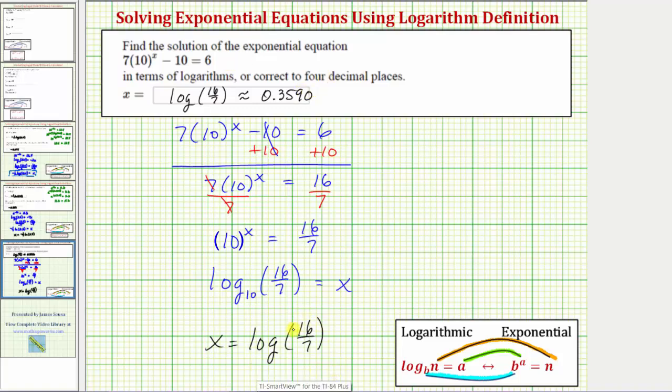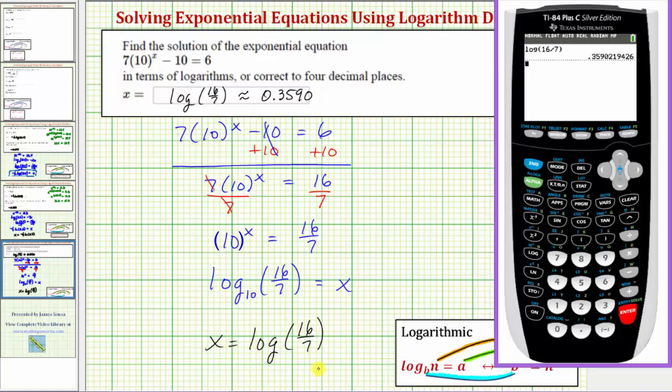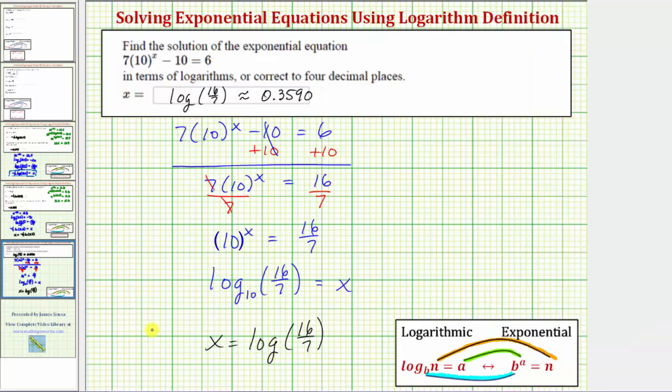Before we go, let's verify that our solution is correct by making the substitution for x in the equation. So on the left side of the equation, we would have seven, and then times 10, raised to the power of common log 16 sevenths, right arrow, and then we have minus 10, and this should equal positive six. And notice how it does, verifying our solution is correct. I hope you found this helpful.